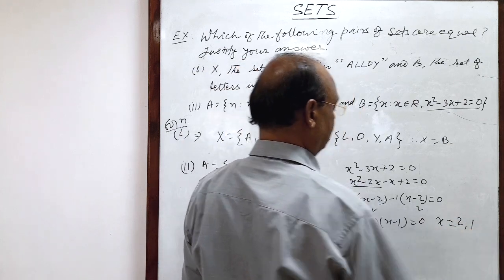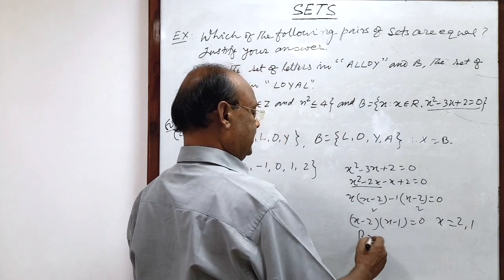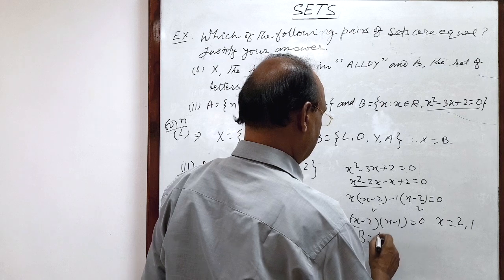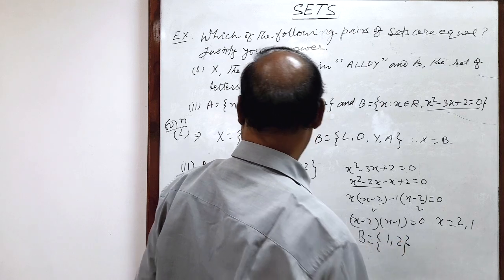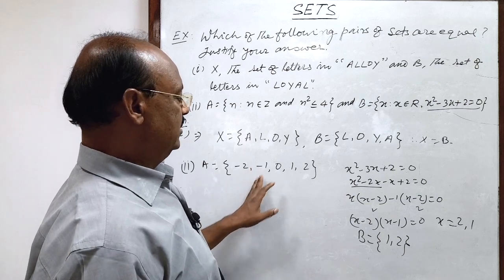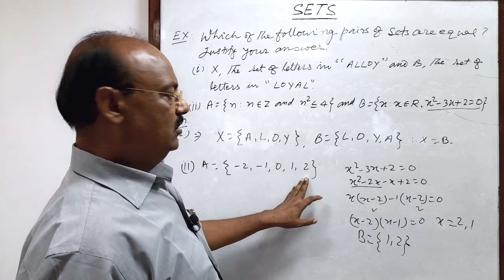So what is the set B here? Set B consists of elements 1 and 2, whereas set A has elements -2, -1, 0, 1, and 2. So obviously these two sets are not equal.